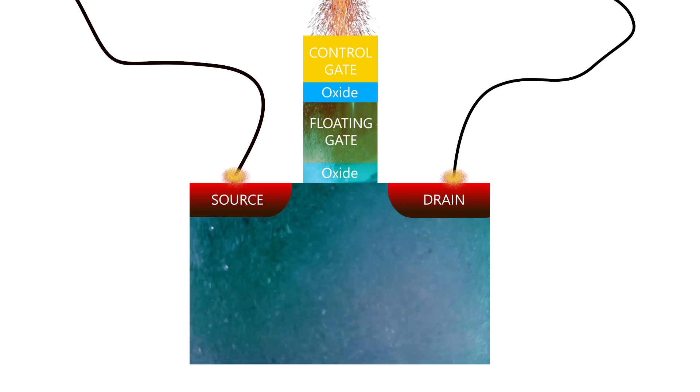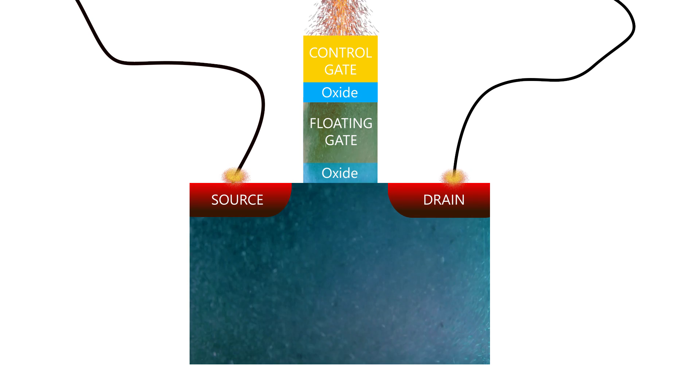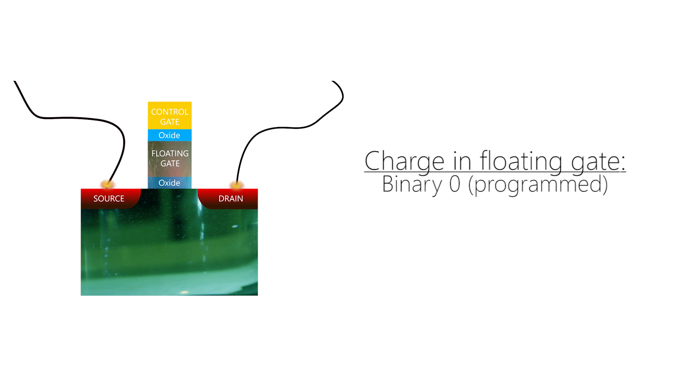This makes possible the storage of binary information in each cell. In order to read it, we apply a charge to both the control gate and the drain, and we measure the conductivity of the channel. Essentially, if the floating gate holds a charge, then no current will flow through the cell, and the result will be a binary zero.